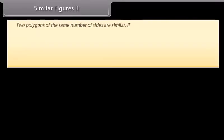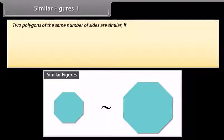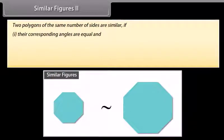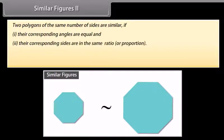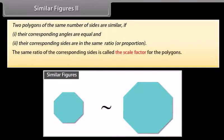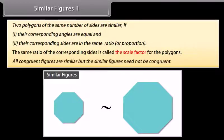Two similar figures — two polygons of the same number of sides are similar if: one, their corresponding angles are equal; and two, their corresponding sides are in the same ratio or proportion. The same ratio of the corresponding sides is called the scale factor for the polygons. All congruent figures are similar but similar figures need not be congruent.